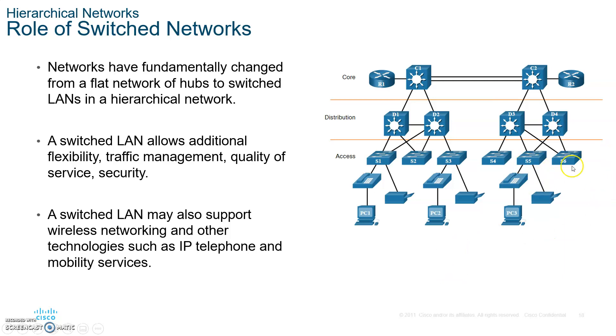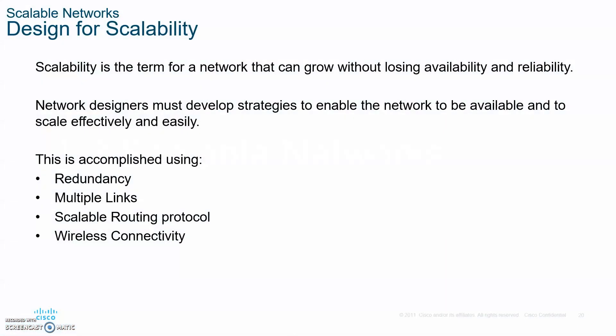At the core layer and at the distribution layer you want redundancy because you want to eliminate the single point of failure. Scalability is a term for a network that can grow without losing availability and reliability. To achieve this you must have redundancies.